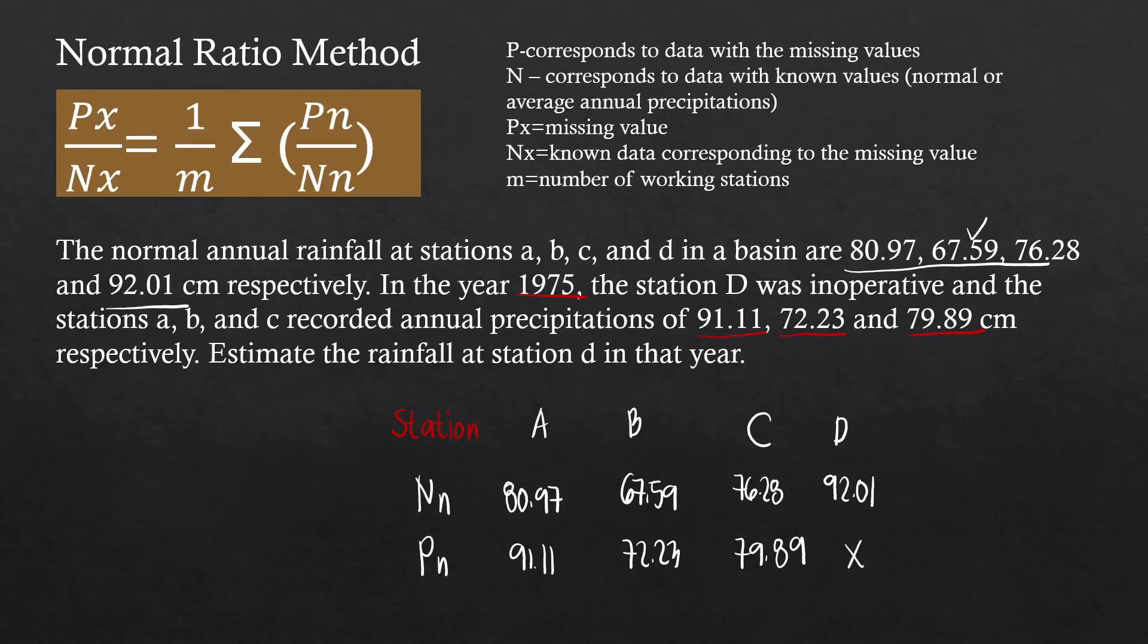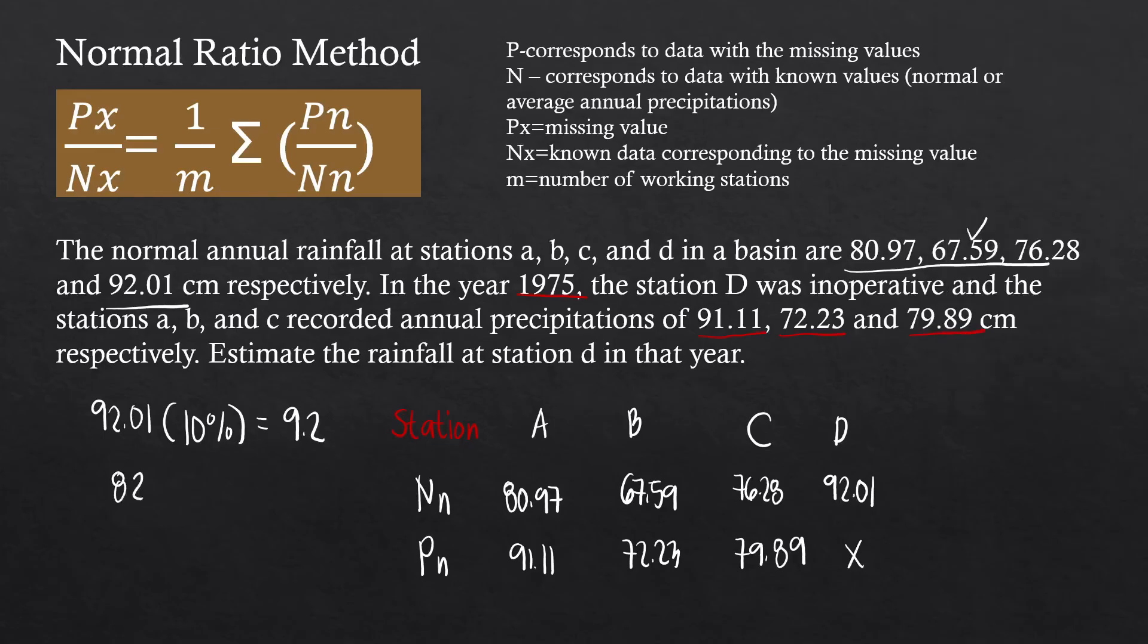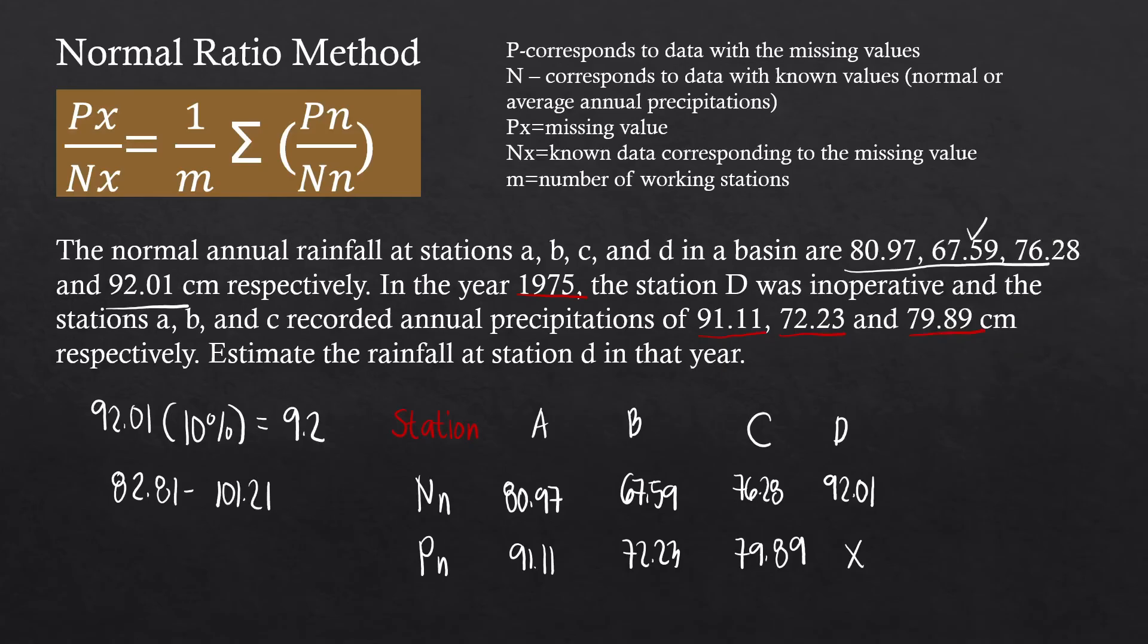First, we need to identify our range. Since this value corresponds to the missing value, this will define our range. We have 92.01 multiplied by 10%, which is approximately 9.2. So 92.01 times 0.10 equals 9.201, and 92.01 minus 9.2 is 82.81. Our range is 82.81 up to 101.21. Clearly, the data for B, A, and C do not fall within the range, which means you can't use the simple arithmetic method. So we will now use this formula.